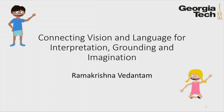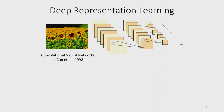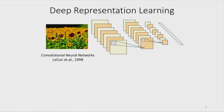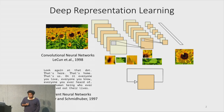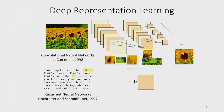I'm going to talk about connecting vision and language for interpretation, grounding, and imagination. In recent years, there's been a lot of progress in artificial intelligence built on top of successes in learning deep representations. For example, with convolutional neural networks, we can learn hierarchies of features which allow us to recognize objects. Also with recurrent neural networks, we can model sequences and long-term dependencies.